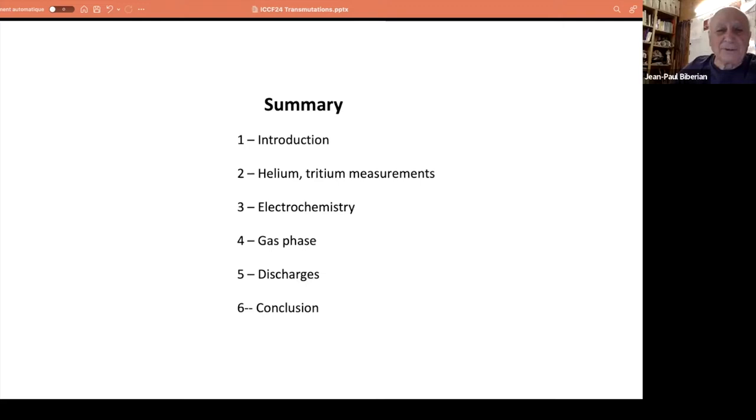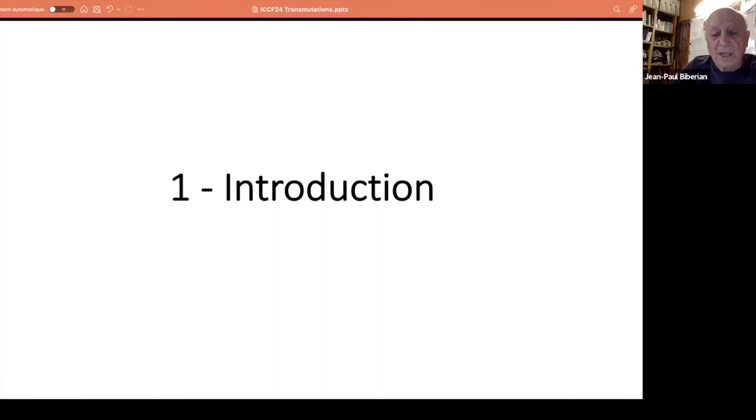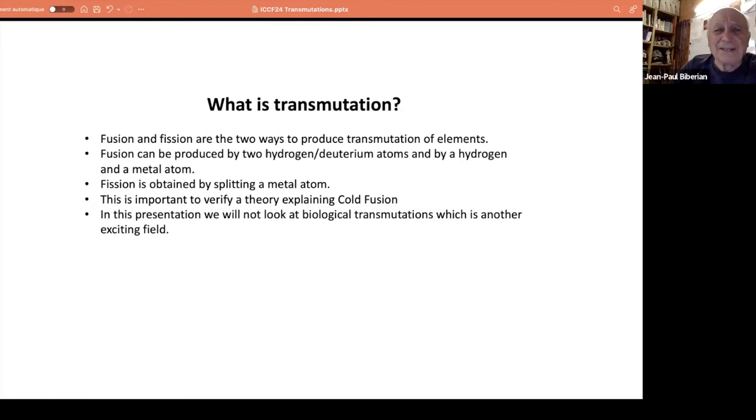Why do we need transmutation? I will give you an introduction to explain that, then we see light elements like helium tritium measurements, then we go to different ways of making transmutation like electrochemistry, geochemistry, gas phase experiments, discharges, and then go to a conclusion. So let's start by the introduction.